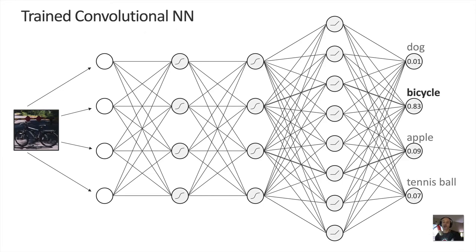When a neural network has been trained, it passes the input image through the network layer by layer, transforming the image into something different — like smaller images — at each layer. Each layer recombines the images generated in the prior layer, and the images get smaller and smaller until at the very end they're just a single pixel with a value between 0 and 1. That value represents the confidence the neural network has that the image represents the given object — the higher the number, the more confident it is.